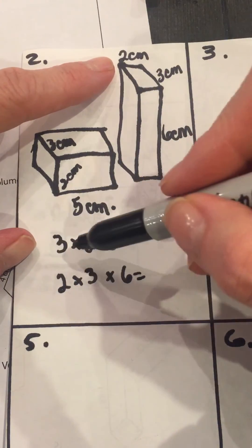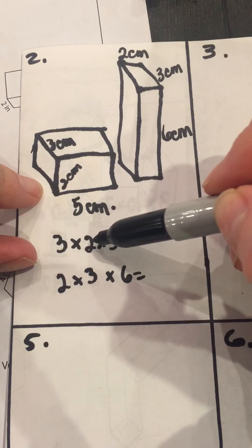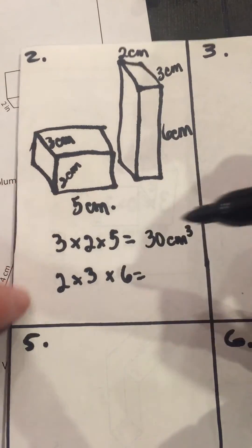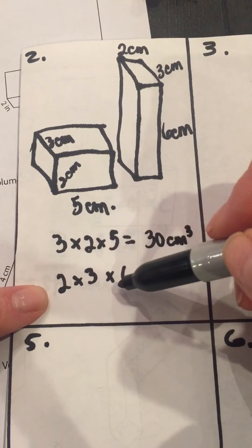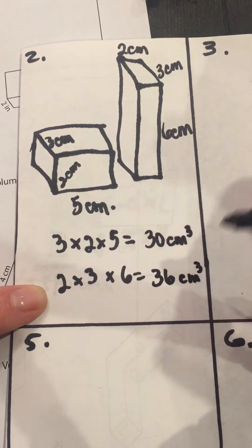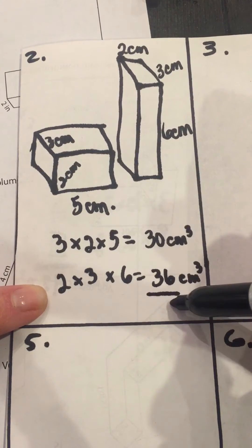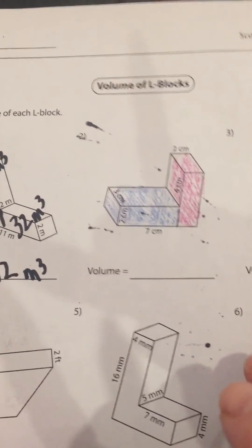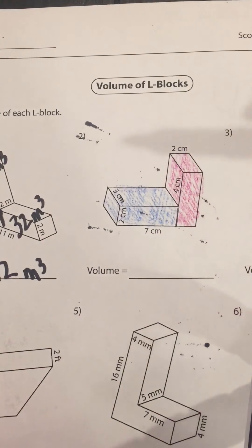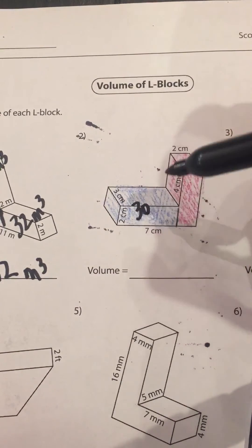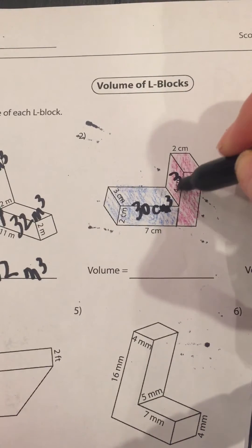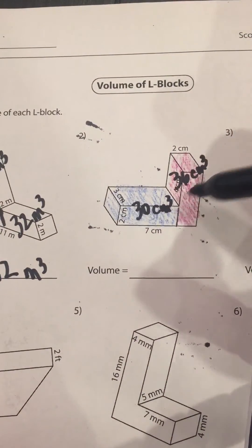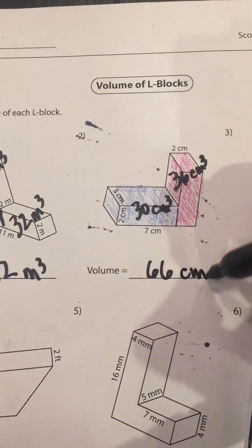Let's solve the volume of the first shape. Three times two is six, and six times five is thirty cubic centimeters. The next shape is two by three, which is also six, times six is thirty-six cubic centimeters. Let's add the two together and we get sixty-six cubic centimeters. Going back to our original drawing, the three by two by five piece was thirty cubic centimeters, the other one was thirty-six cubic centimeters, and the total volume — since volume is additive — is sixty-six cubic centimeters.